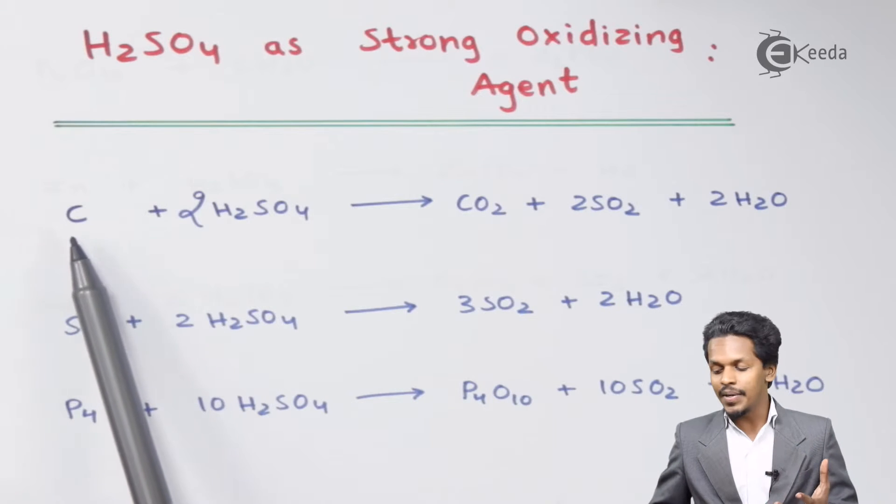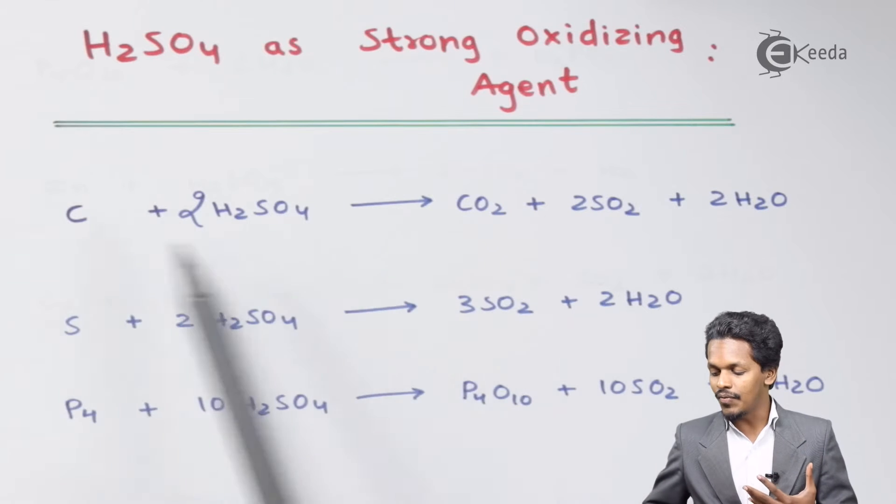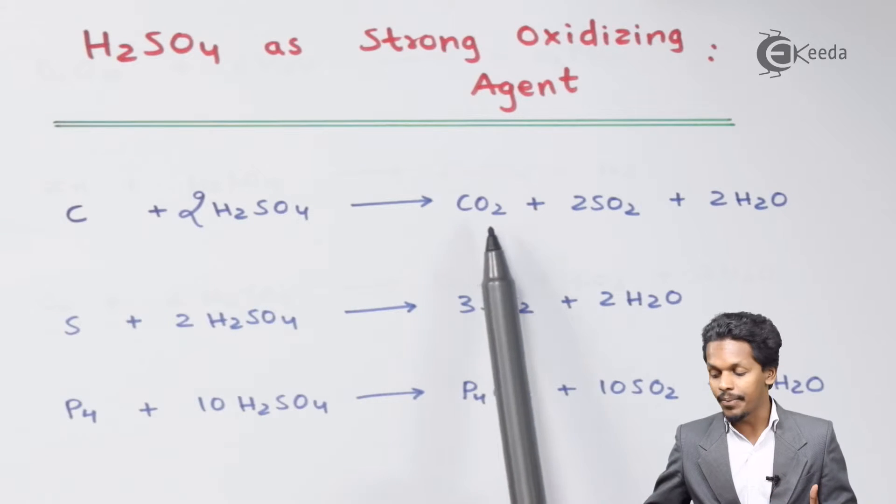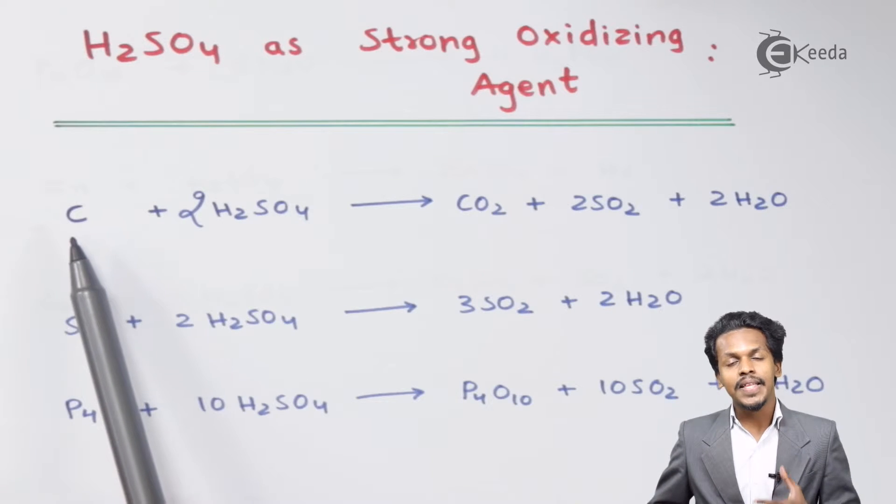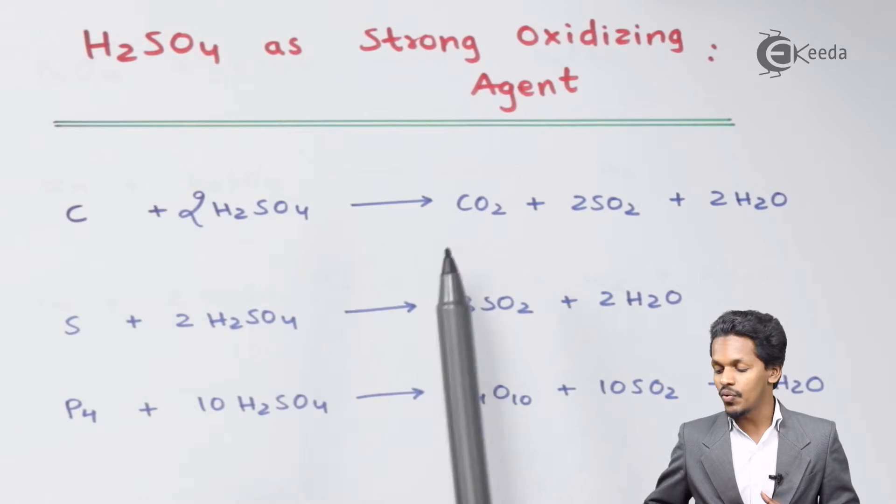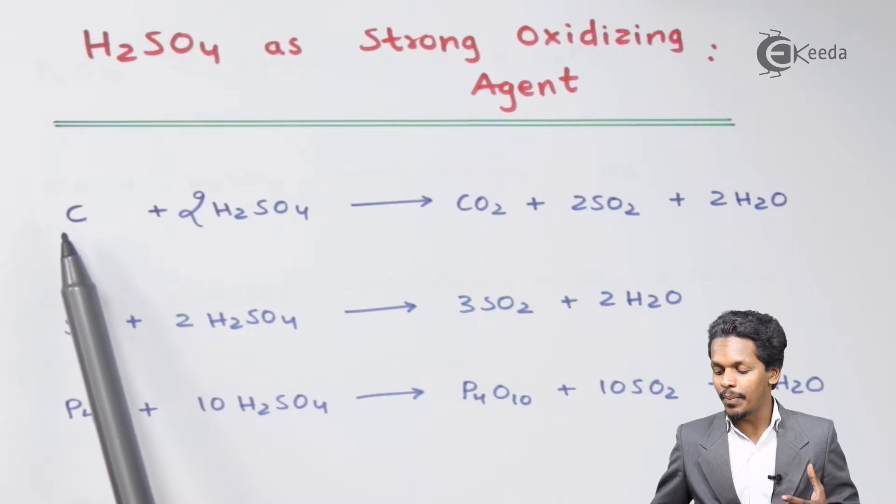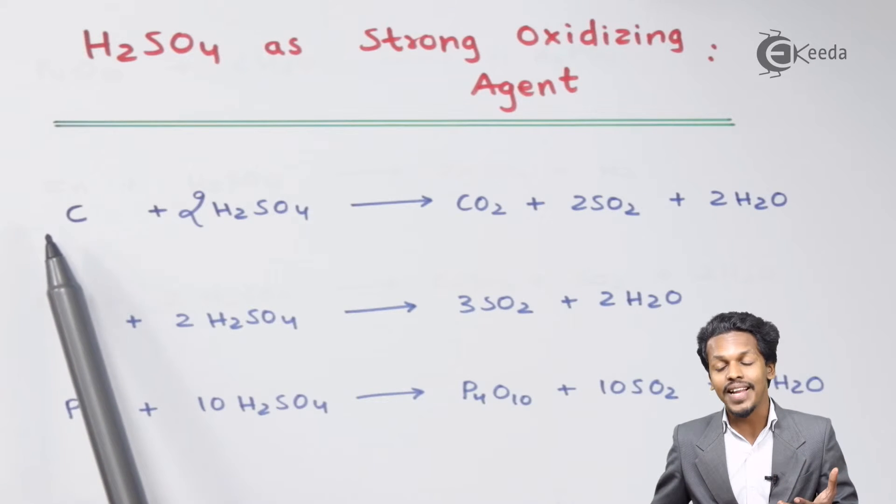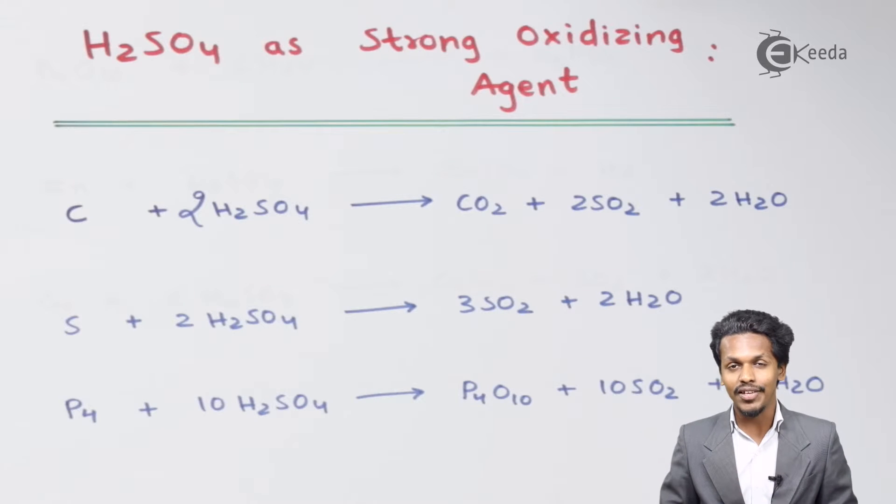Whenever carbon is treated with 2 moles of H2SO4, this will convert the carbon into carbon dioxide, along with 2 moles of SO2 and 2 moles of H2O. Here the carbon which has no oxygen attached to it, but after the reaction with H2SO4 there will be formation of attachment of oxygen. So thereby this carbon gets oxidized to CO2, and that is the reason H2SO4 is acting like a good oxidizing agent.